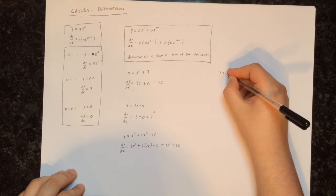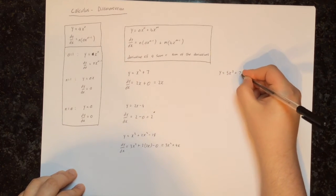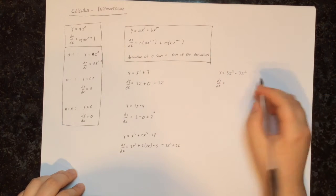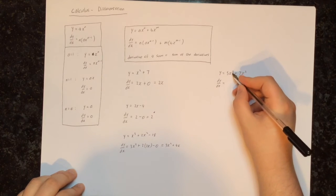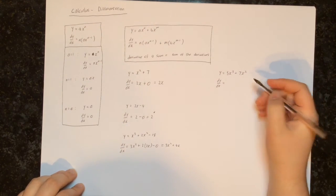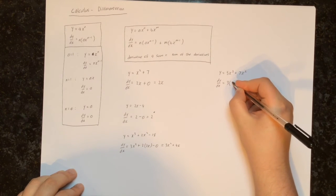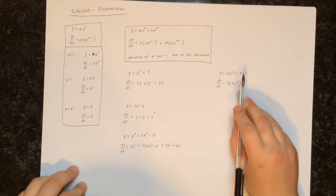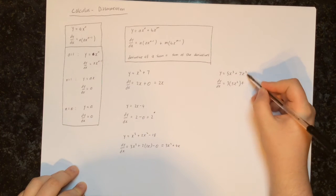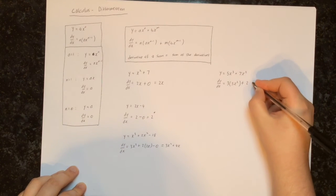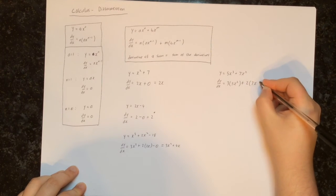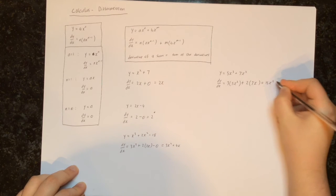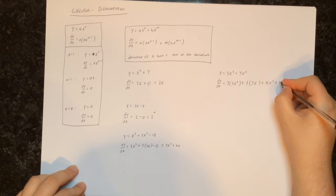Next let's try y equals 5x cubed plus 7x squared. We take the derivative of each part separately. For 5x cubed, multiply by the power 3 times 5x and reduce the power by 1 down to squared, giving 3 times 5x squared. Then add the derivative of 7x squared: multiply by the power 2 and reduce the power by 1 down to 1. Simplifying: 15x squared plus 14x.